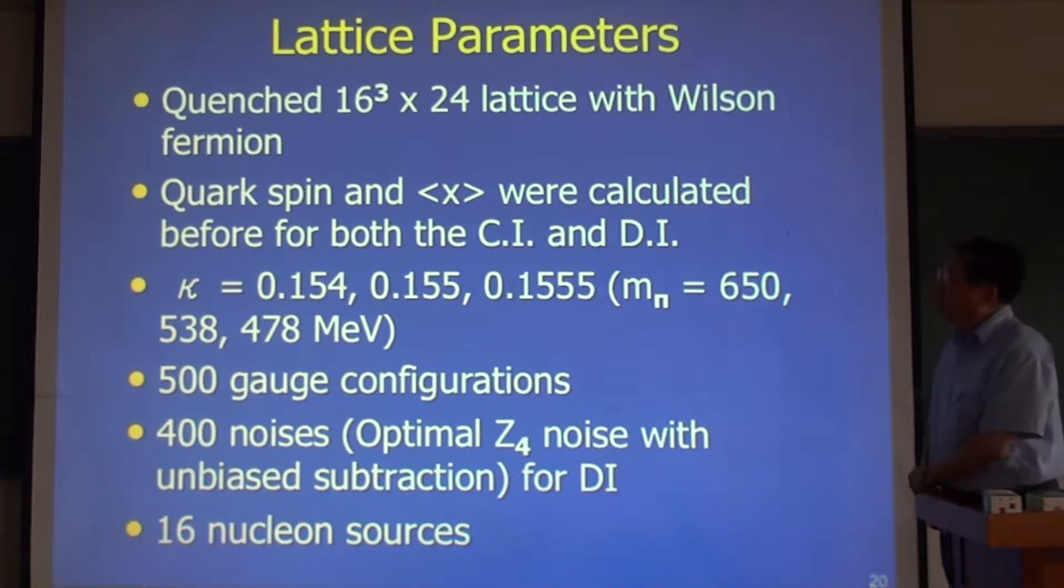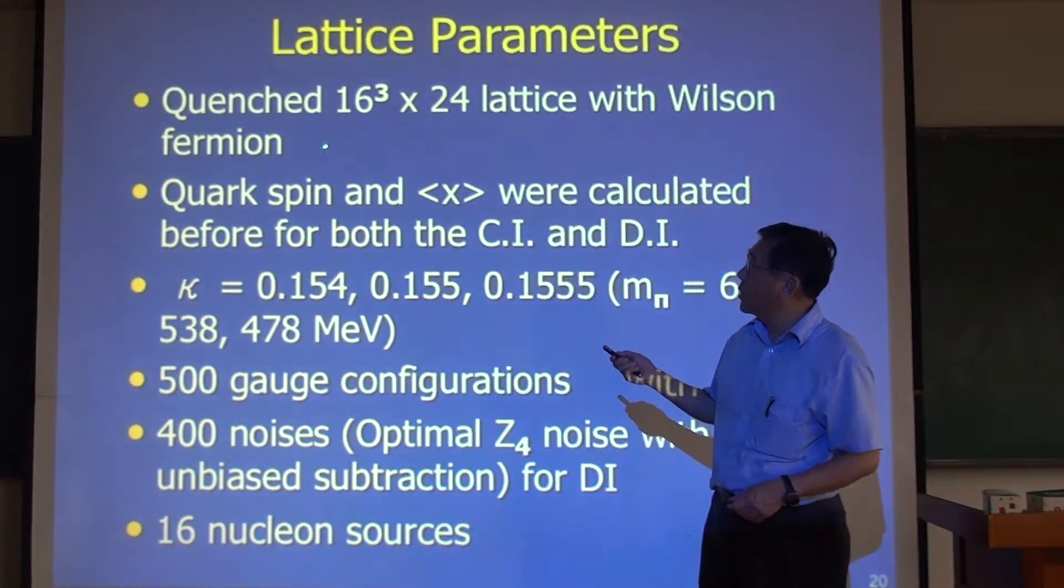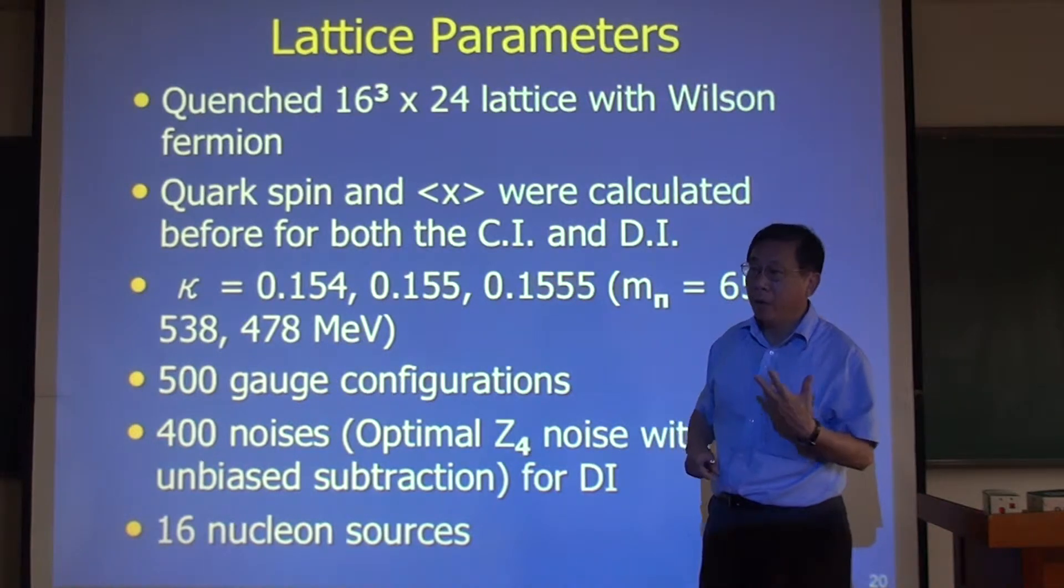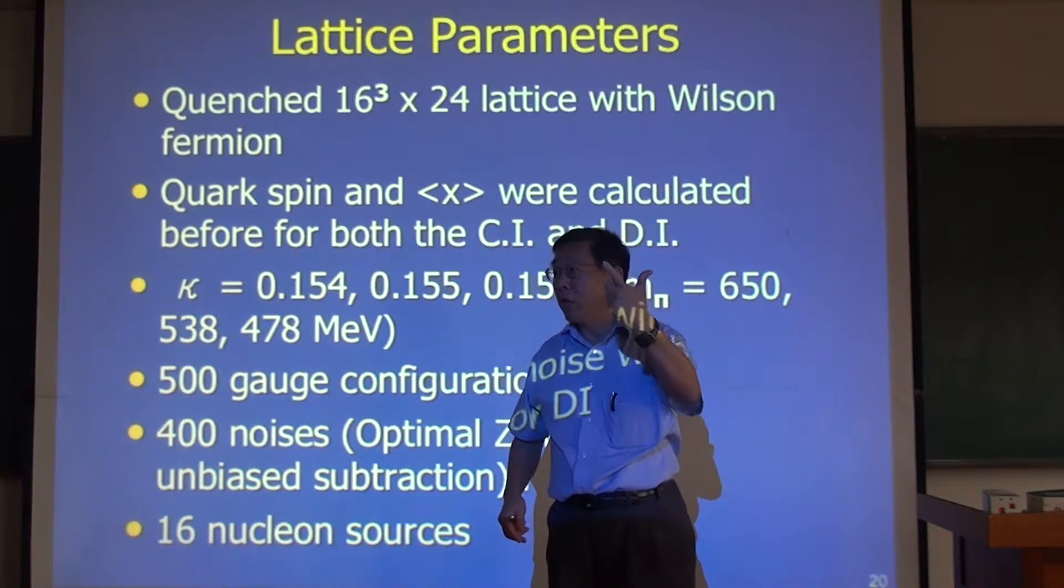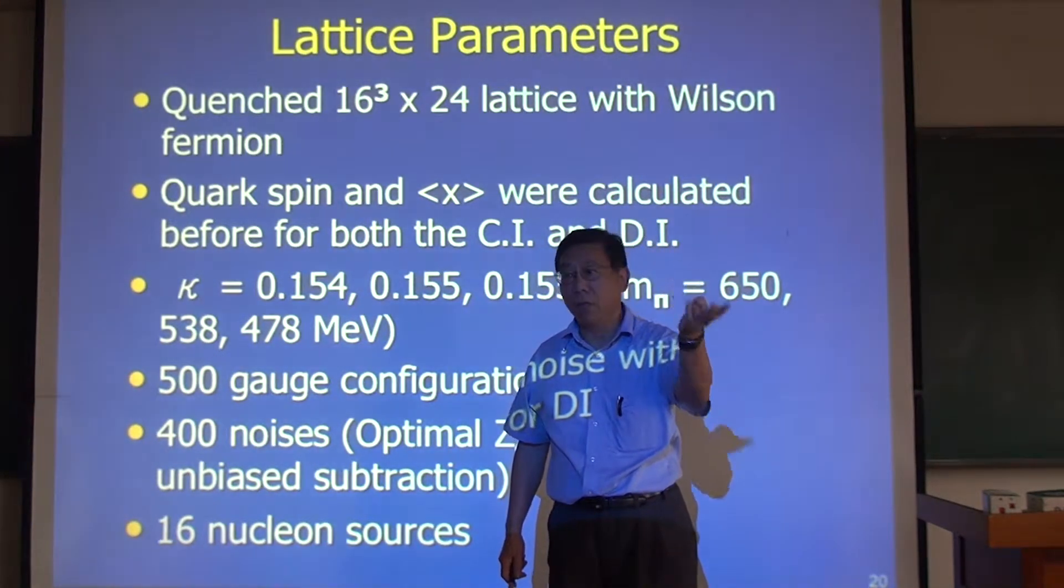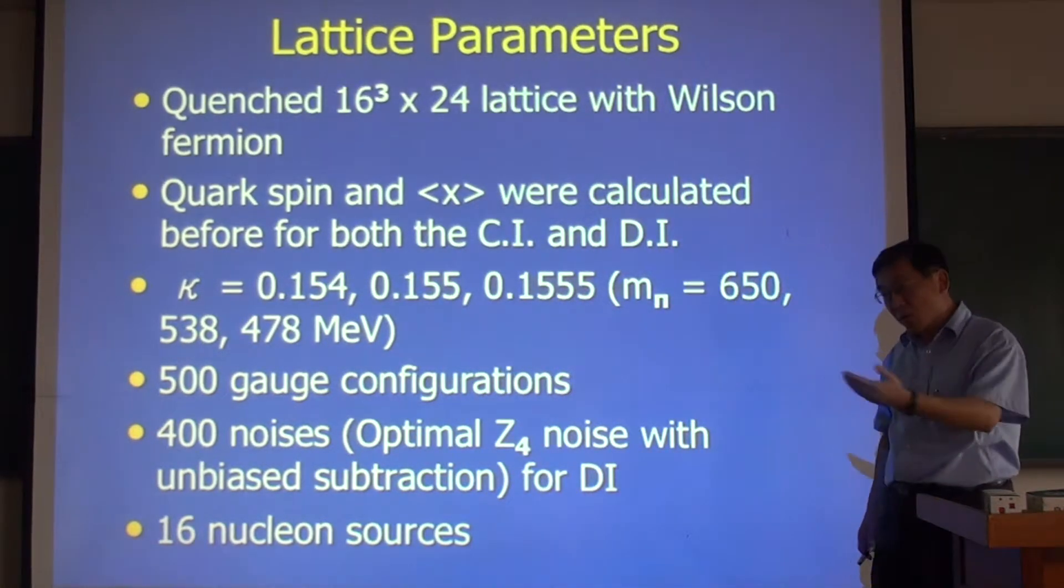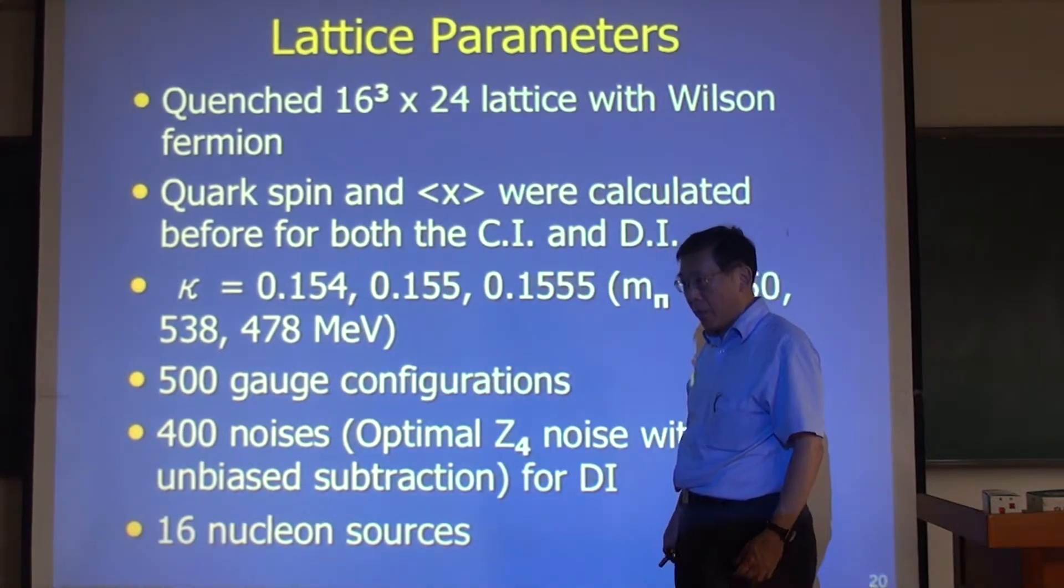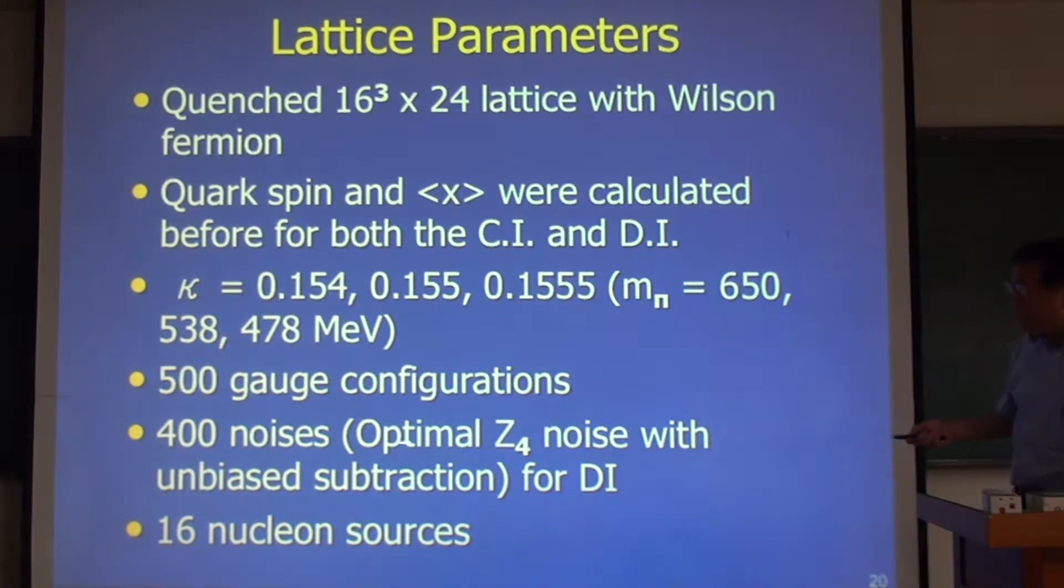The lattice I'm going to show you are still in the quenched approximation. Dynamical fermion is still coming. The reason we showed you this one was that there are eight quantities we have to calculate: momentum and angular momentum as six calculations, plus spin has two calculations for connected and disconnected. So eight calculations. We thought we might as well finish this before we move on to the dynamical fermions. For this calculation, we have 500 gauge configurations, 400 noises each, and 16 nucleon sources put in different positions separately to improve statistics.